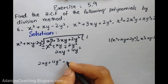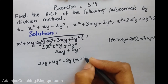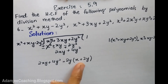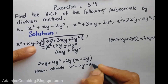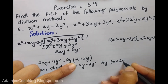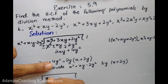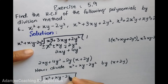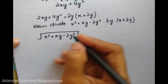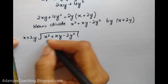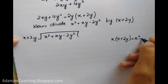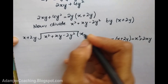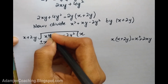From 2xy + 4y², I take 2y as common, which gives x + 2y. Now x + 2y is my new divisor. We will simplify using x + 2y. Now we divide x² + xy - 2y² by x + 2y. From x + 2y, multiplying by x gives x² + 2xy.